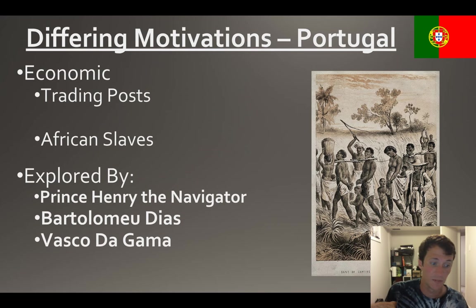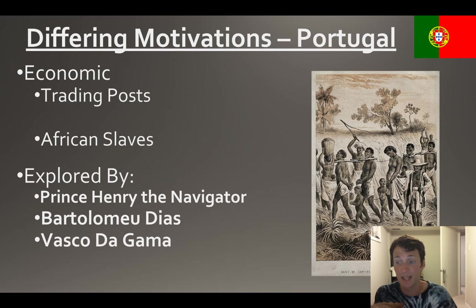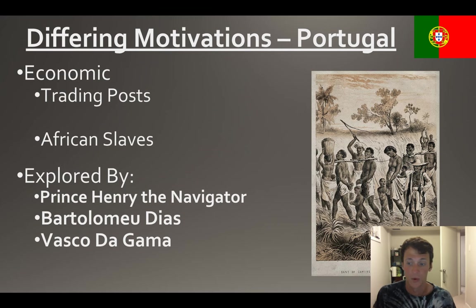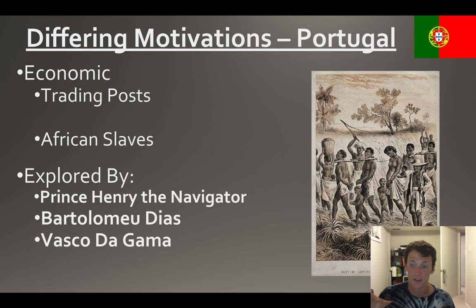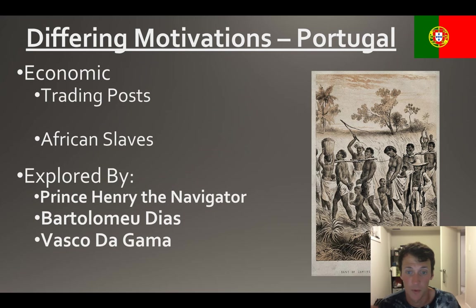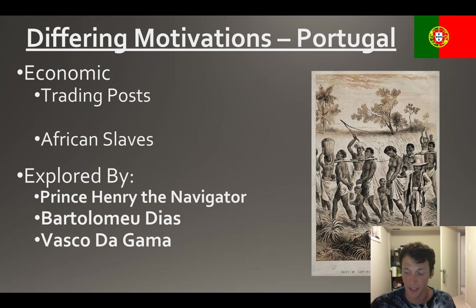We talked about Prince Henry the Navigator financing a lot of these expeditions to head along the western coast of Africa to see what's over there. You have Bartholomew Dias, who is the first one to make it to the southern end of Africa for Portugal, and you have Vasco da Gama, who is the first one to make it all the way to the Indies.